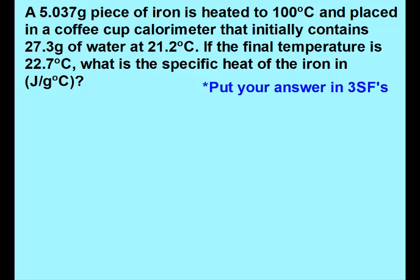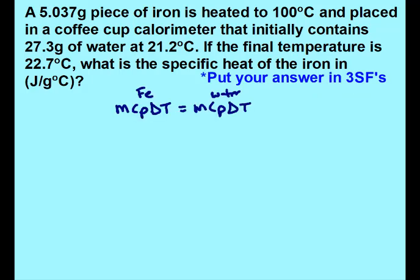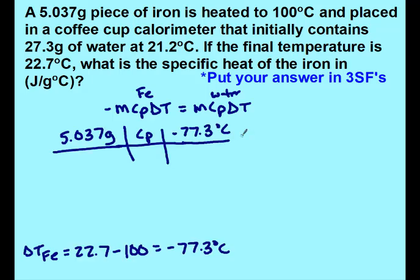Go ahead and pause the video and do this one on your own — find the specific heat of iron. You should have iron on one side, water on the other. Iron also started at the higher temperature. The metal does not always start at the higher temperature, so don't just make it a habit of always putting the negative on the left. My final temperature was 22.7 and the initial temperature is 100, so I got a delta T of negative 77.3 degrees Celsius.